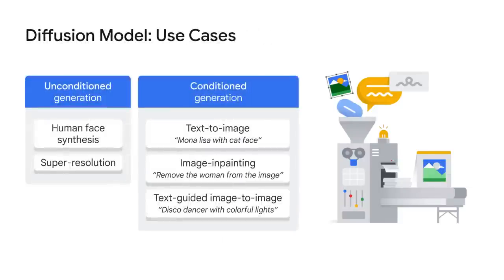Diffusion models show promise across a number of different use cases. Unconditioned diffusion models, where models have no additional input or instruction, can be trained from images of a specific thing, such as faces as you can see on the slide here, and will learn to generate new images of that thing. Another example of unconditioned generation is super-resolution, which is really powerful in enhancing low-quality images. We also have conditioned generation models, and these give us things like text-to-image, where we can generate an image from a text prompt, and other things like image in-painting and text-guided image-to-image, where we can remove or add things and edit the image itself.